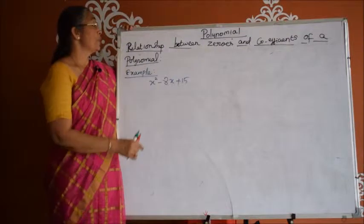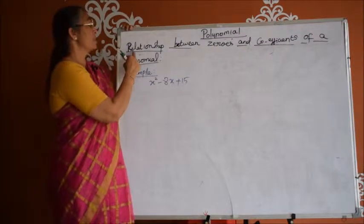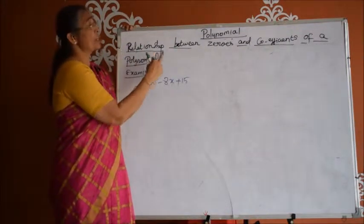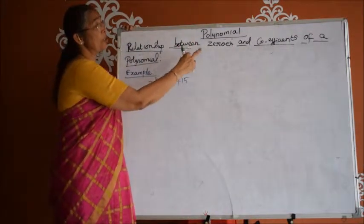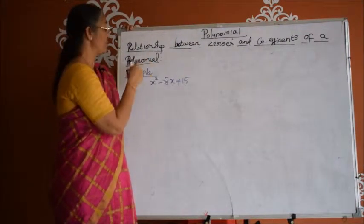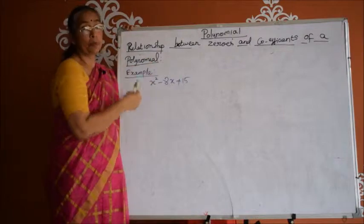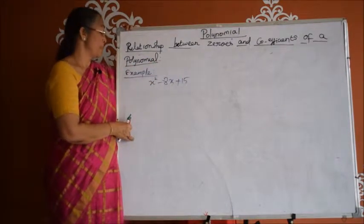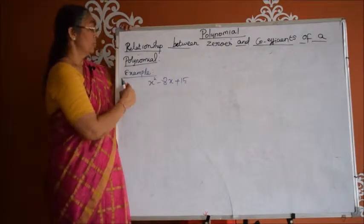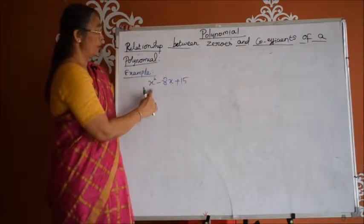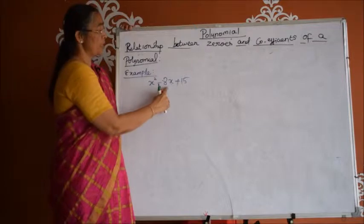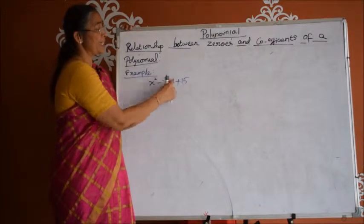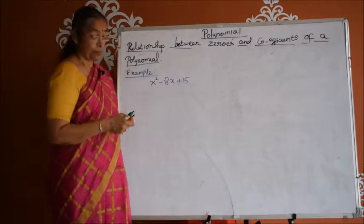In this video, let us discuss the relationship between zeros and coefficients of a polynomial. We do this with an example quadratic polynomial x squared minus 8x plus 15.